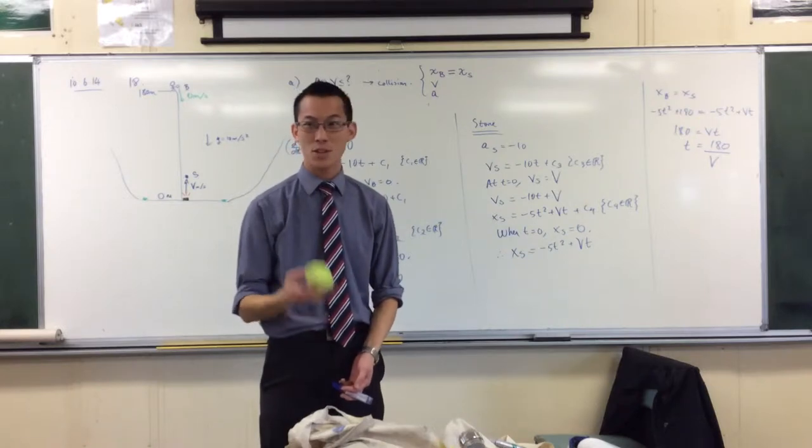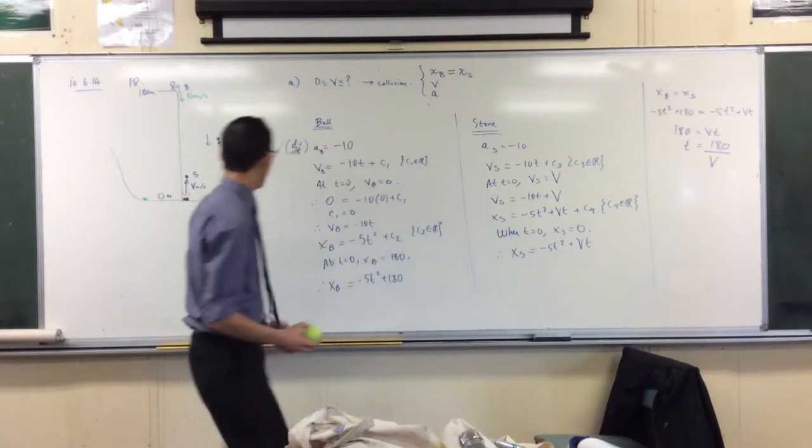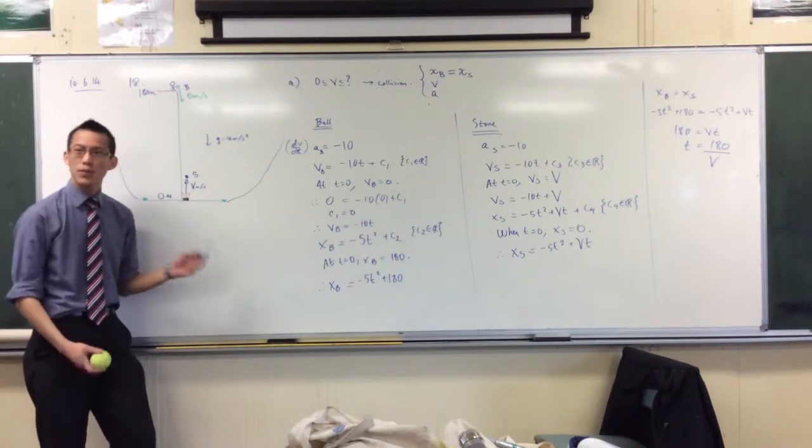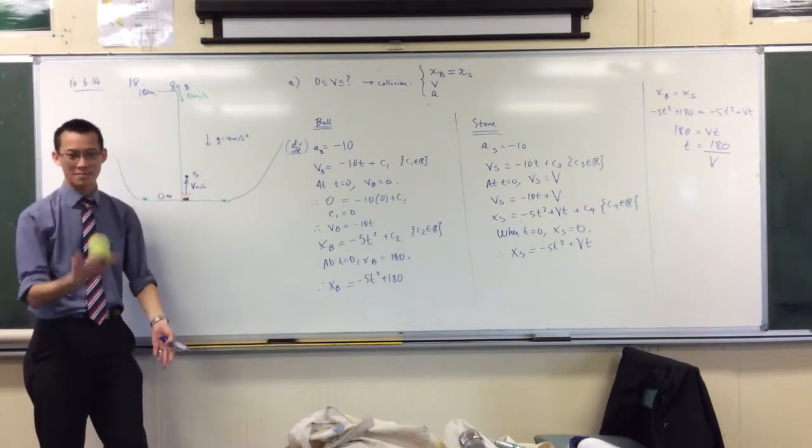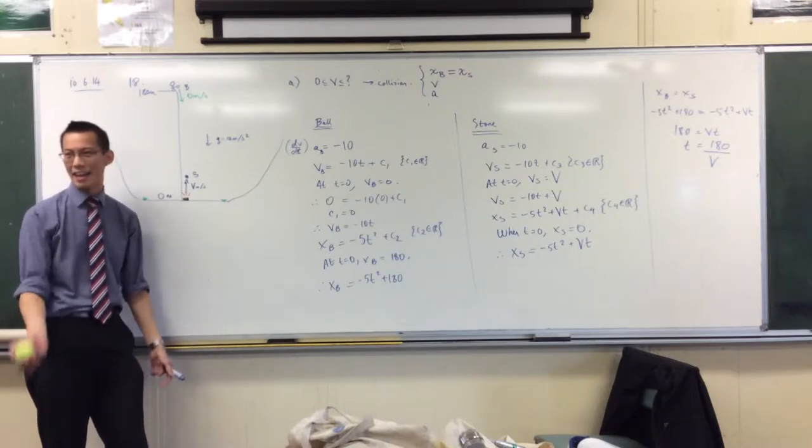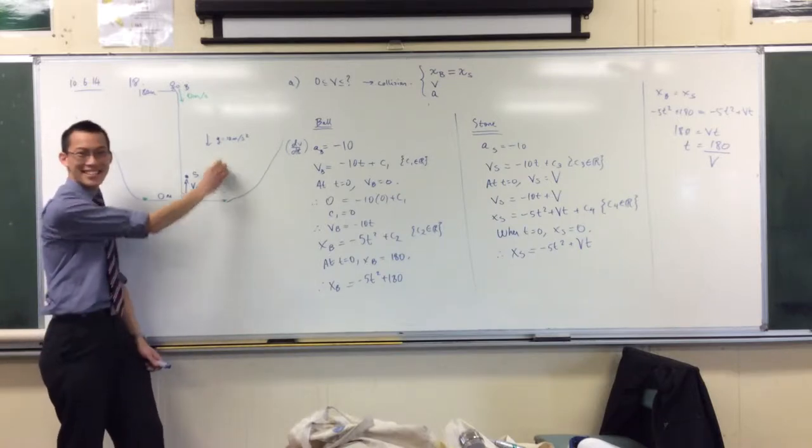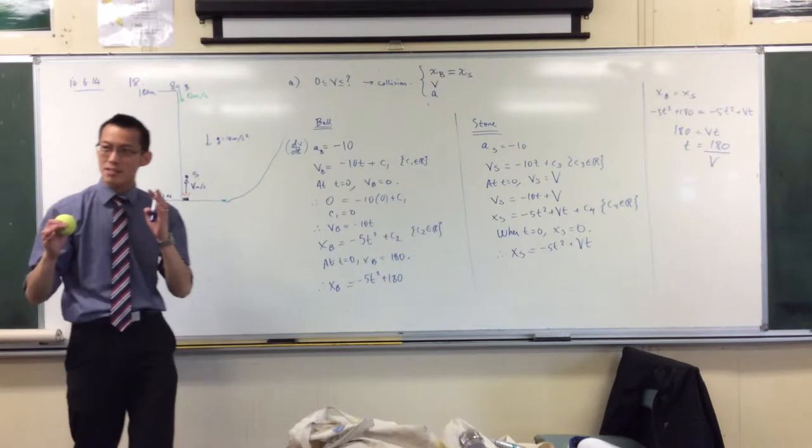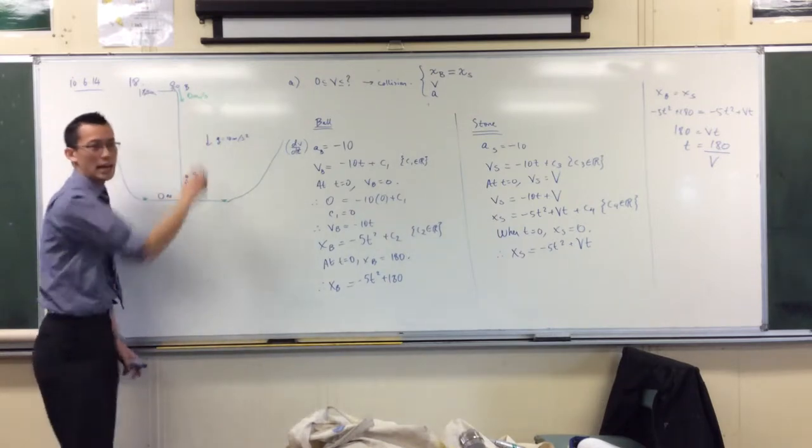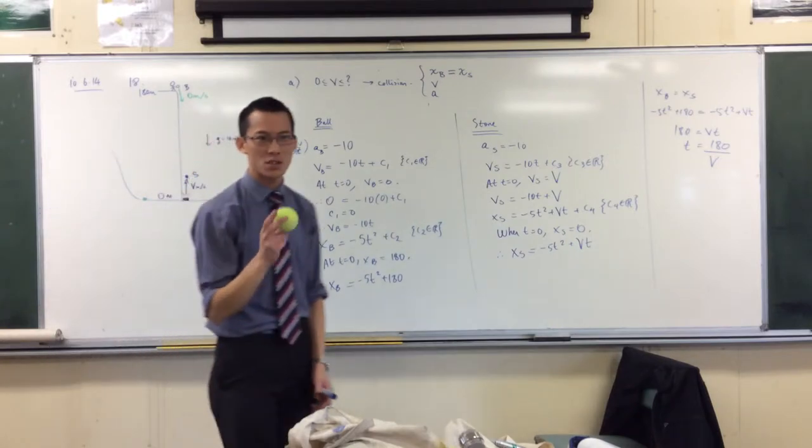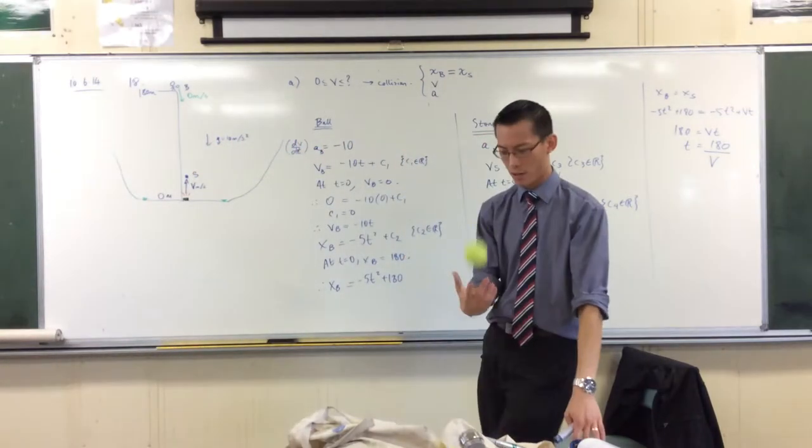I posed a question to some of you: if the stone was fired up at just a pitiful one meter per second—in other words, I threw it as hard as I could—you guys almost universally said to me, no, the stone will not collide with the ball. Now can you just say what was the reason why? Why wouldn't it collide?